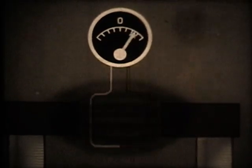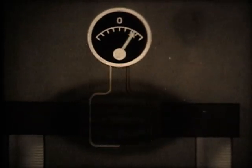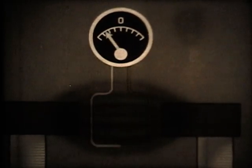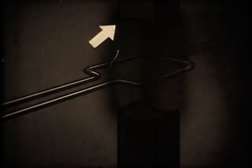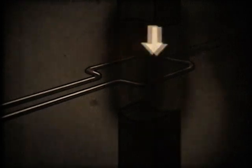And all generators, however small or large, use this same basic principle. It involves only two strong magnetic poles to provide the magnetic field and a coil which can be turned on an axle.